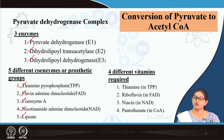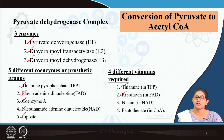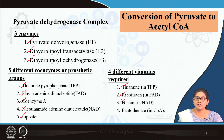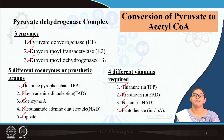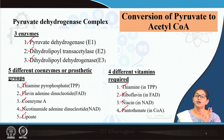Nutritionally, this enzyme complex is also important because there are 4 vitamins required. What are those vitamins? Thiamine, which is present in thiamine pyrophosphate; riboflavin, present in FAD (flavin adenine dinucleotide); niacin, present in NAD; and pantothenate, present in coenzyme A. So in this enzyme complex there are 3 different enzymes, 5 prosthetic groups or coenzymes, as well as 4 vitamins required for enzyme activity.